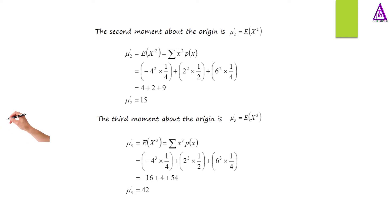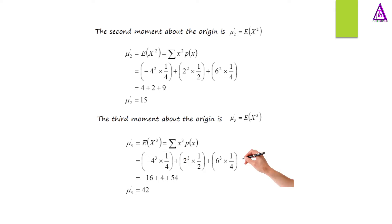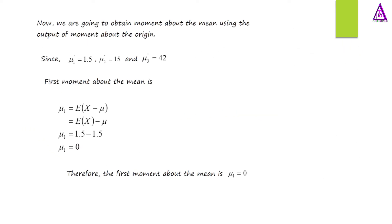The third moment about the origin equals the expected value of x raised to power 3, which equals the summation of x cubed times p(x). This equals negative 4 cubed times 1/4, plus 2 raised to power 3 times 1/2, plus 6 raised to power 3 times 1/4. This equals negative 16 plus 4 plus 54. Therefore, the third moment about the origin equals 42.